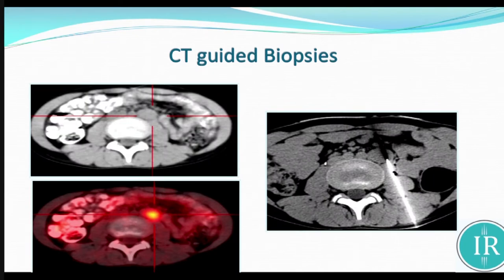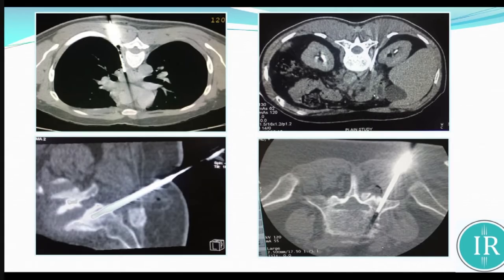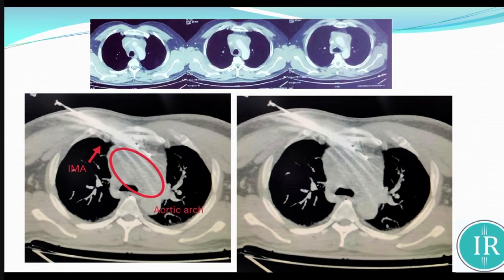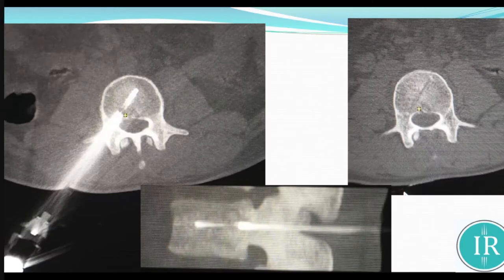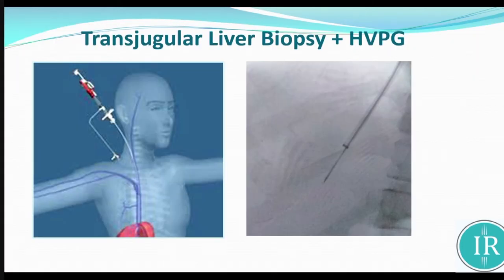Other than the brain, we can take any type of biopsy — mediastinal, para-aortic, bone biopsy, and aortocaval node biopsy. This is the transjugular liver biopsy. We usually do routine liver biopsy, but the transjugular liver biopsy is for patients who have gross ascites or a decreased coagulation profile. In this situation, the biopsy is done through the transjugular hepatic vein, where the bleeding chances are minimal.